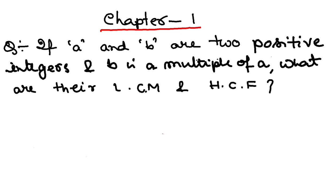Now the third question: if A and B are two positive integers and B is a multiple of A, what are their LCM and HCF? Let's take an example to understand this situation. Let's say 4 and 8. So 8 is a multiple of 4 - 4 times 2 is 8.